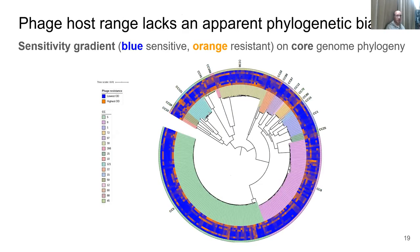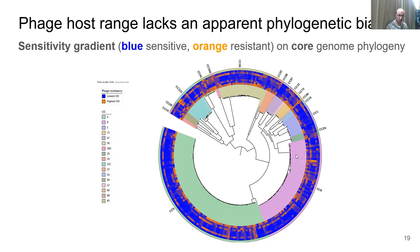Before doing the GWAS, I needed to ask whether phage host range has a phylogenetic bias — meaning more closely related strains have more similar phenotypes — which is a significant issue for GWAS because you can't tell genetic background from individual variants that cause the phenotype. I constructed a core genome phylogeny of the strains assayed and placed all the phenotypes on the phylogeny. You can see that resistance emerges independently throughout different clades, so there doesn't appear to be a phylogenetic bias for host range.